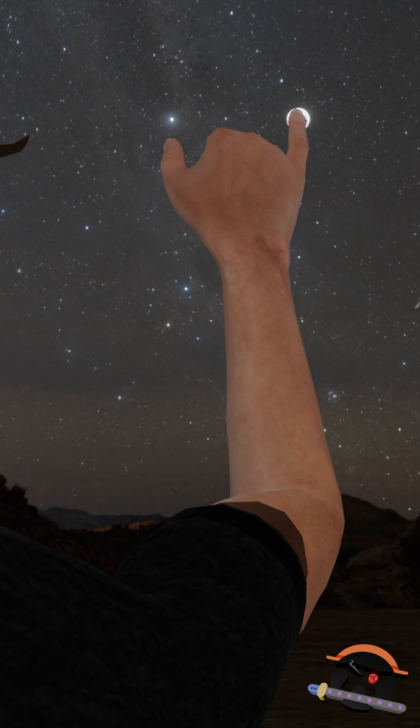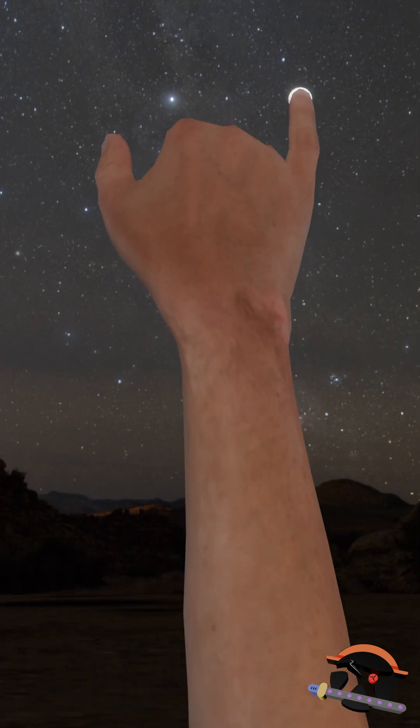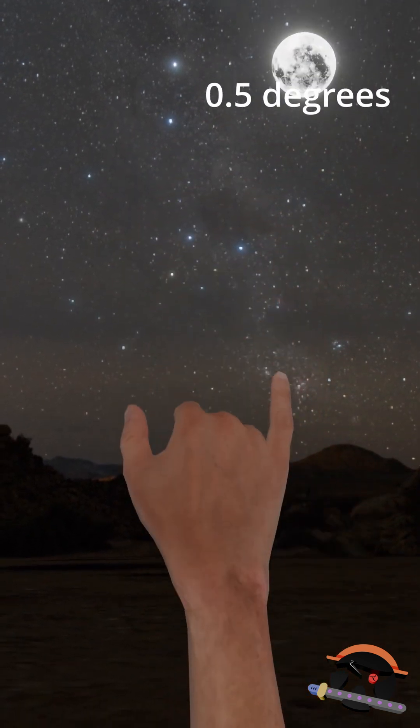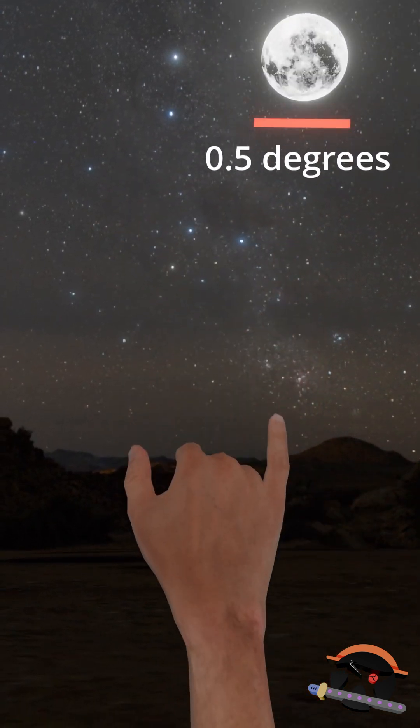Now, if you measure your small finger as how wide it is in angular terms, it will actually appear to be 0.5 degree wide, which means the moon that you are looking at is also 0.5 degrees wide.